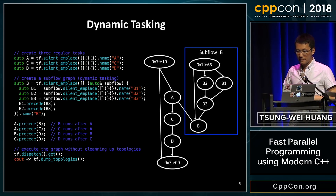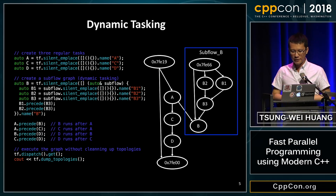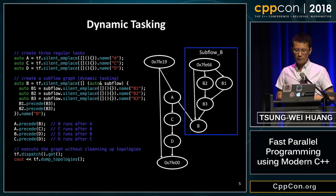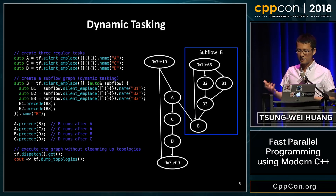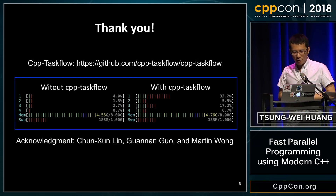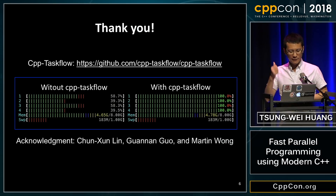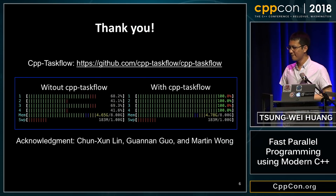We also support dynamic tasking, which is a very powerful feature of the library. This allows you to create a task dependency graph at runtime, and is particularly useful for many applications where you cannot decide the task dependency graph before running the program. Feel free to check out our GitHub and give it a try. Thank you.